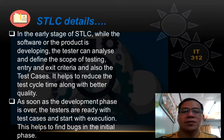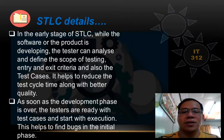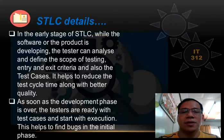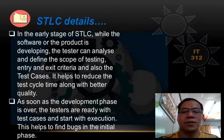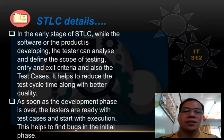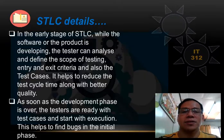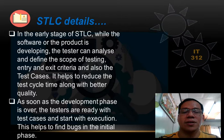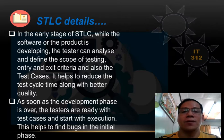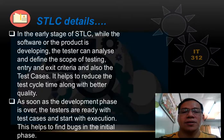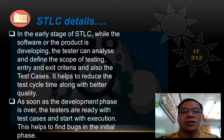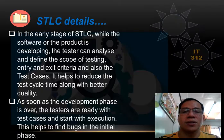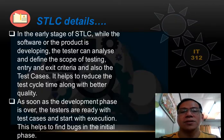In the early stage of STLC, while the software or the product is developing, the tester can analyze and define the scope of testing, entry and exit criteria, and also the test cases. This helps to reduce the test cycle time along with better quality. As soon as the development phase is over, the testers are ready with test cases and start with execution, which helps to find bugs in the initial phase.